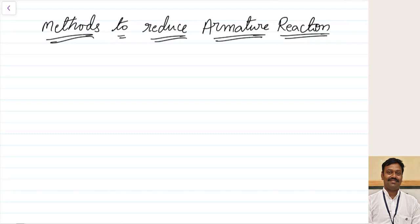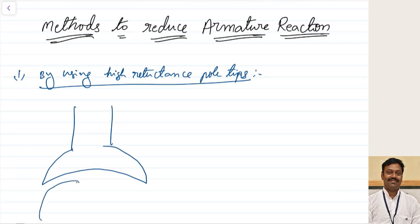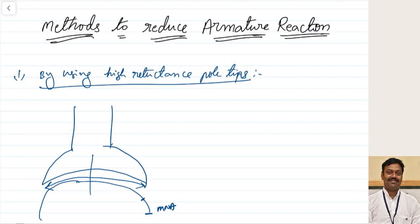The first method is by using high-reluctance pole tips. Our pole is designed to spread flux uniformly, but we want the flux to reach zero before the magnetic neutral axis. As you move from the center toward the pole tips, the flux should decrease and become zero before the GNA.